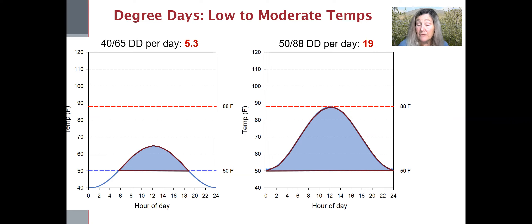In the right graph, the daily max and min are both above the lower threshold. In fact, the max and min are the two thresholds, and we get about 19 degree days in this situation.